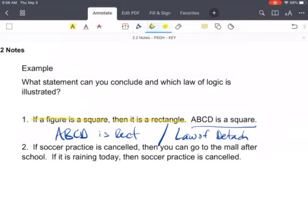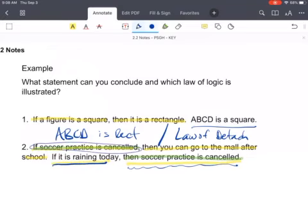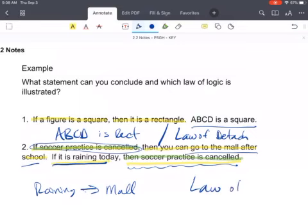Second example says, if soccer practice is canceled, then you go to the mall after school. If it is raining today, then soccer practice is canceled. So soccer practice is canceled is said twice. So therefore, if it is raining today, then soccer practice is canceled. Since soccer practice is canceled, then you're going to go to the mall. I'm connecting multiple statements together. So if it is raining, then I'm going to go to the mall. And I'm using the law of syllogism for that, or the chain rule.